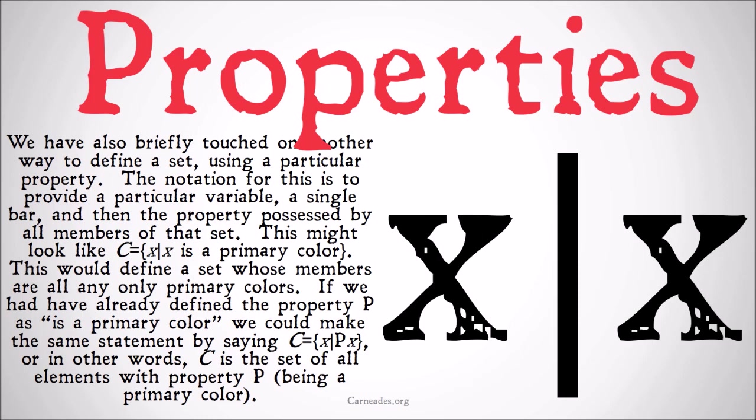So this is a different way to define a set — we're not listing all the members, we're providing a property. That property has a truth condition: for each object, either that object has that property or it doesn't. If a set is defined in terms of a property, then any object which has that property is a member of that set, and any object which doesn't have that property is not a member of that set.